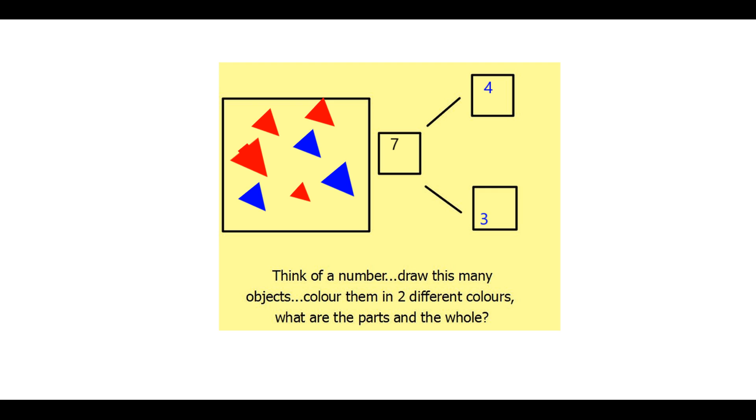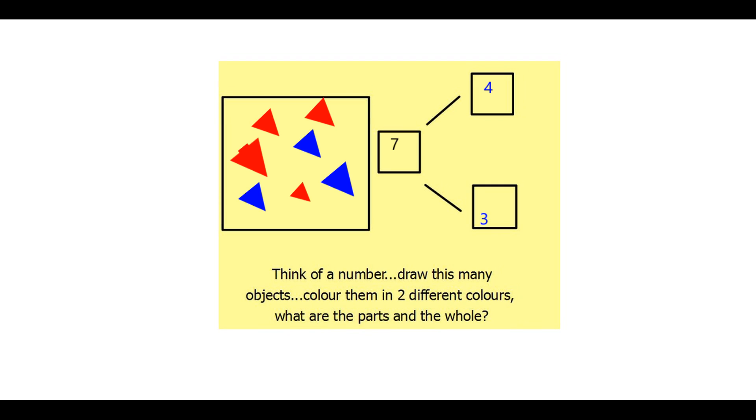And so seven can be made up of a part of four and a part of three. I could go and then change that. So I could actually say that I have another red one. So in that case, the whole is still seven.